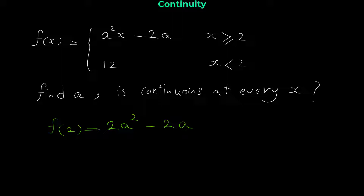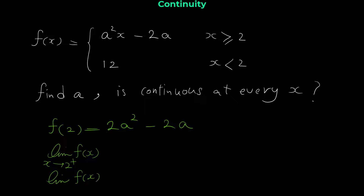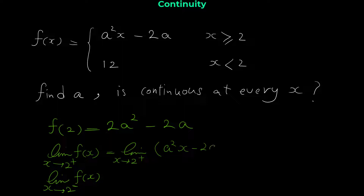A function is continuous at a point if the right limit and left limit at that point exist and are equal to each other. For the right limit — as x approaches 2 from the right, x is greater than 2 — we use the first equation a·(2x) - 2a. Plugging in 2 gives 2a² - 2a.